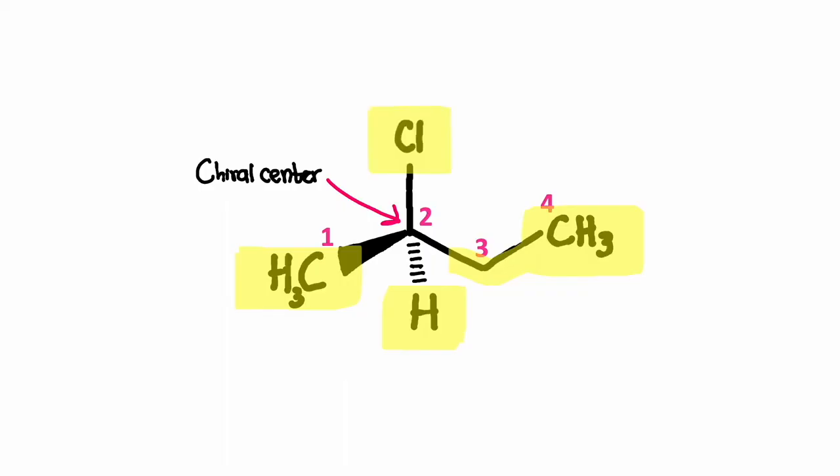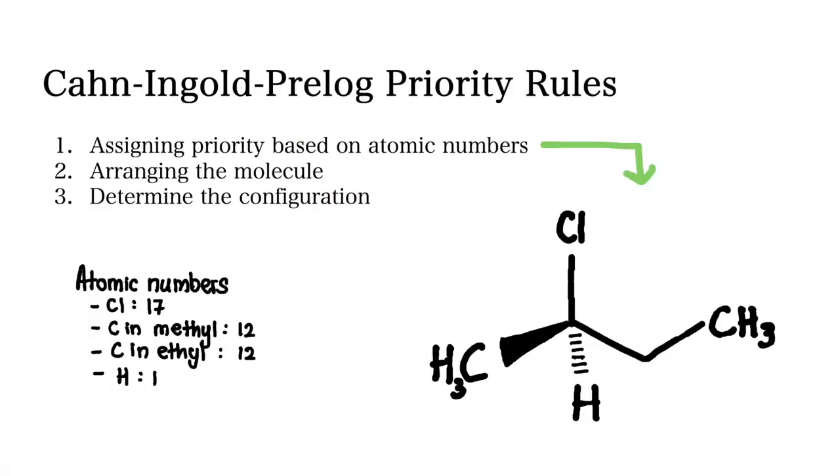Now let's go through the three rules. First one is determining the atomic numbers and assigning priority groups. Priority is assigned based on the atomic numbers of the atoms directly attached to the chiral center, as we discussed before.